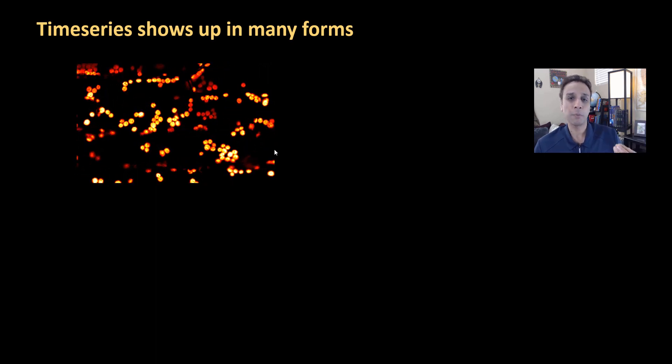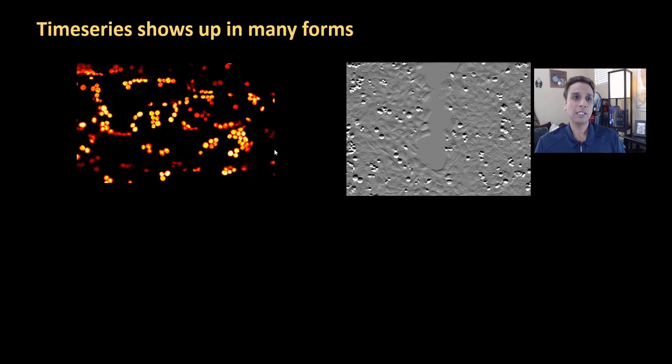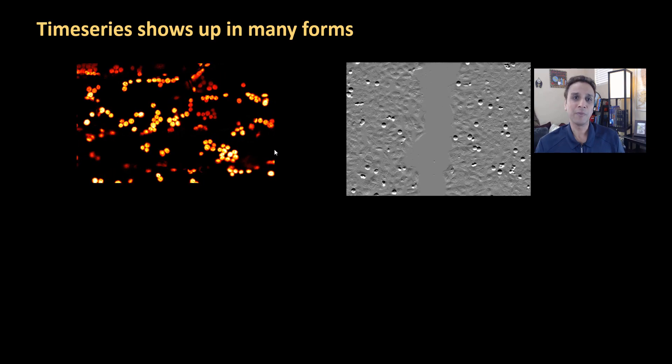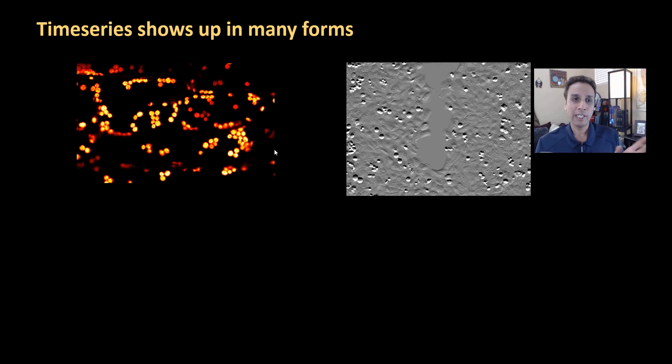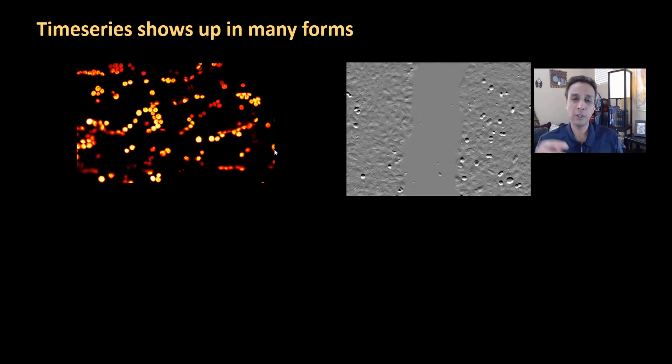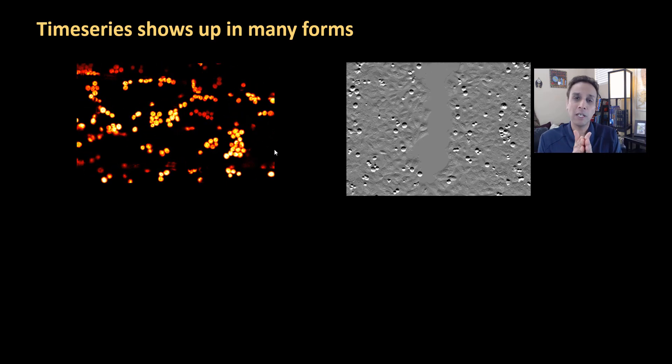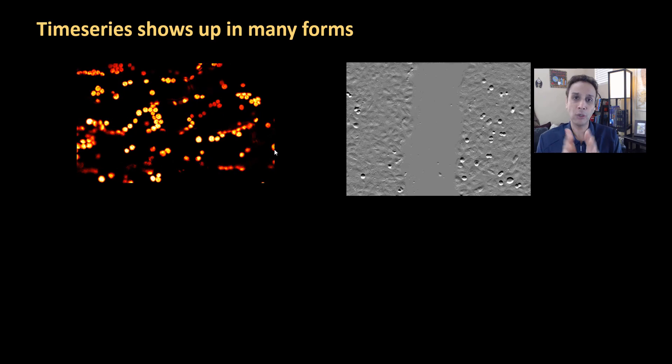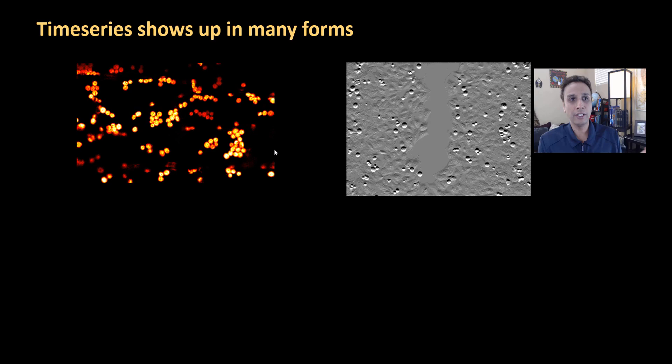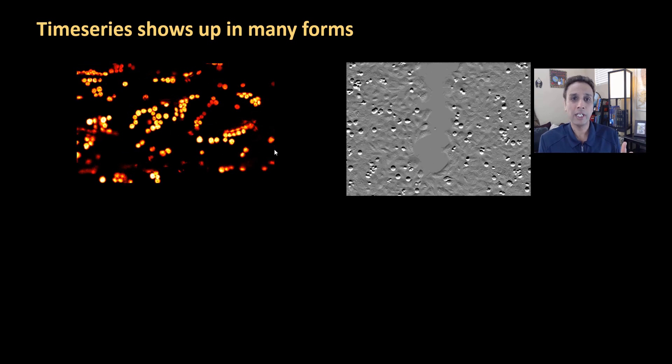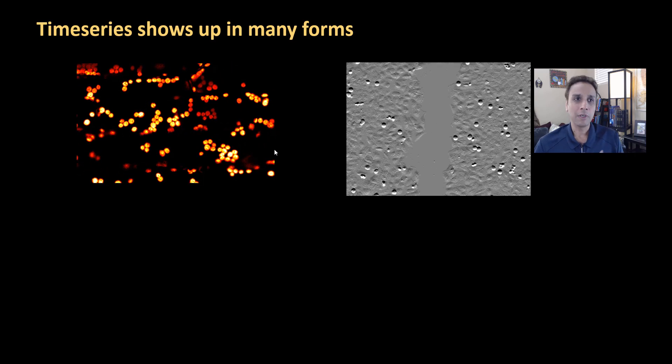Same thing here if you're imaging a wound healing assay - if you're in life sciences you know what I'm talking about. On the left and right you have cells and in the middle you have a scratched area. That scratched area decreases as a function of time because the cells are migrating or growing in that direction. This is again a time series where you can plot the scratched area as a function of time.